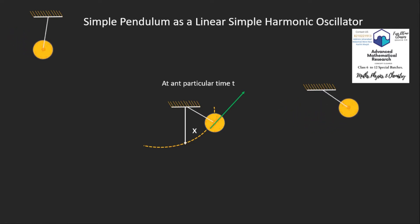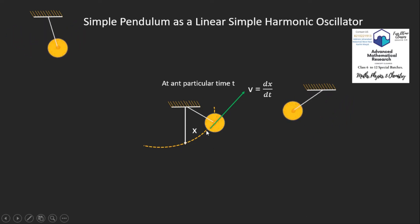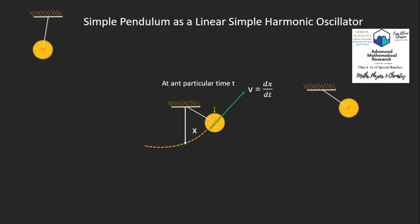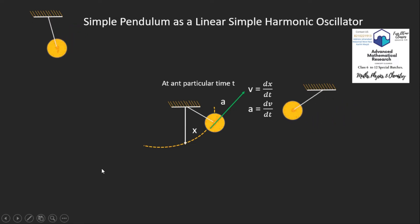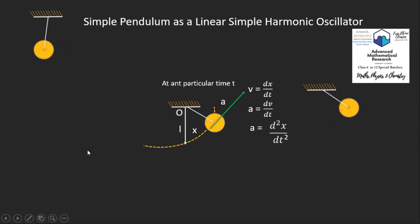The mean position displacement x defines the pendulum's position. Velocity is defined as the time rate of change of displacement: dx/dt. Acceleration is the time rate of change of velocity, and can also be written in terms of displacement x as d²x/dt².